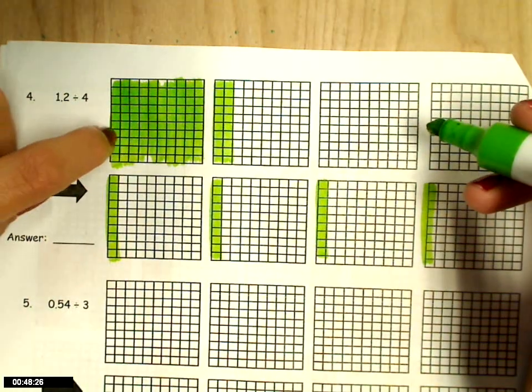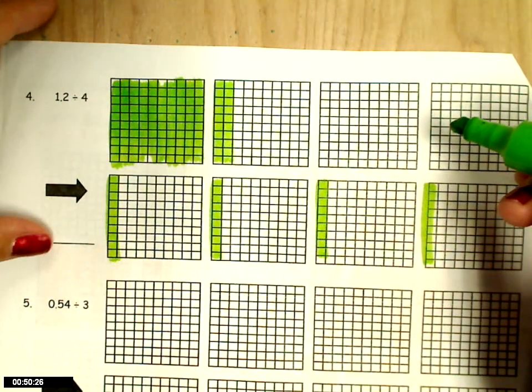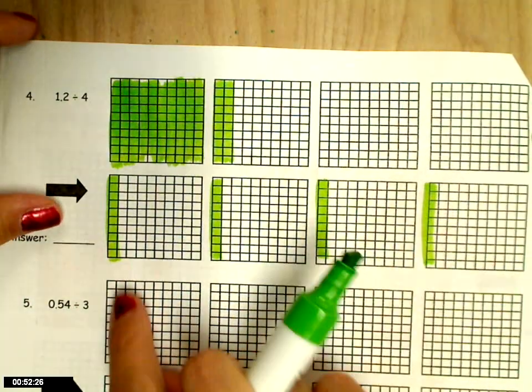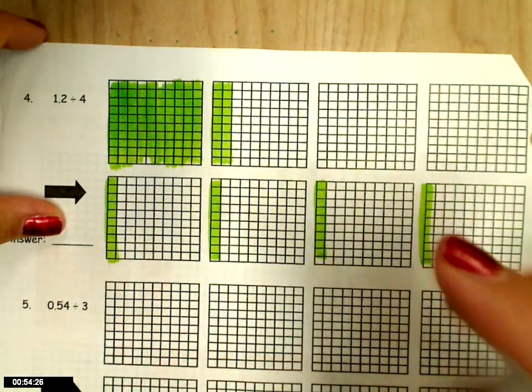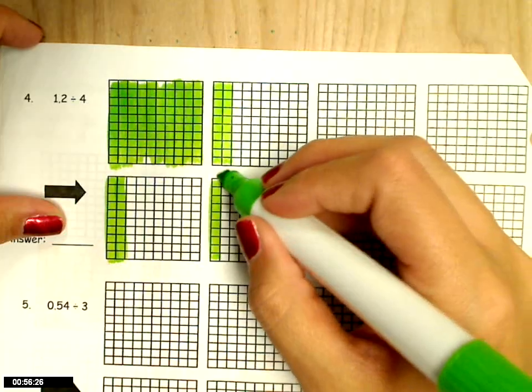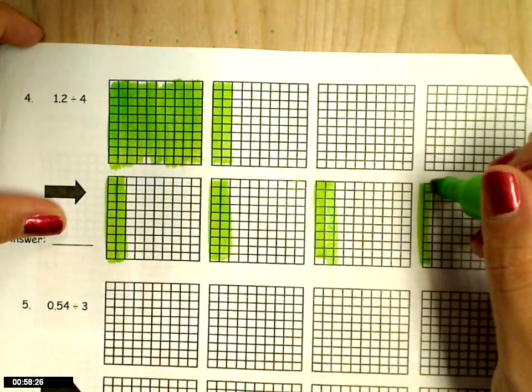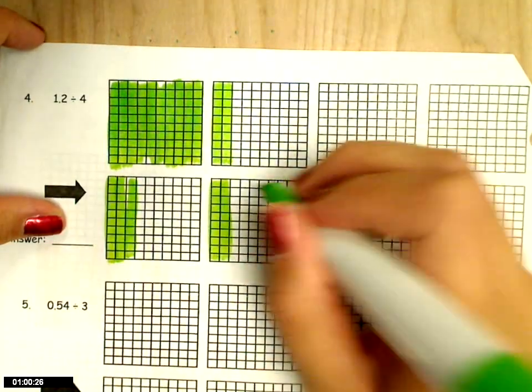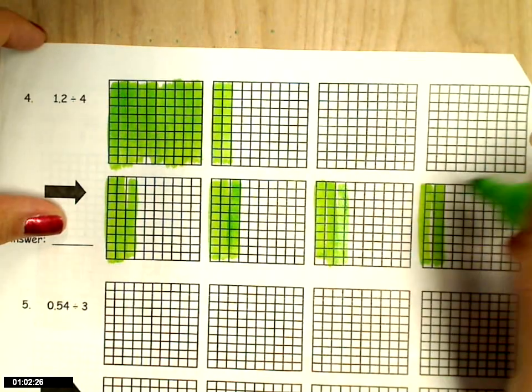And also, if you notice, I have 10 here plus 2 more, so I have 12 tenths. So I can just count 1, 2, 3, 4, 5, 6, 7, 8, 9, 10, 11, 12.